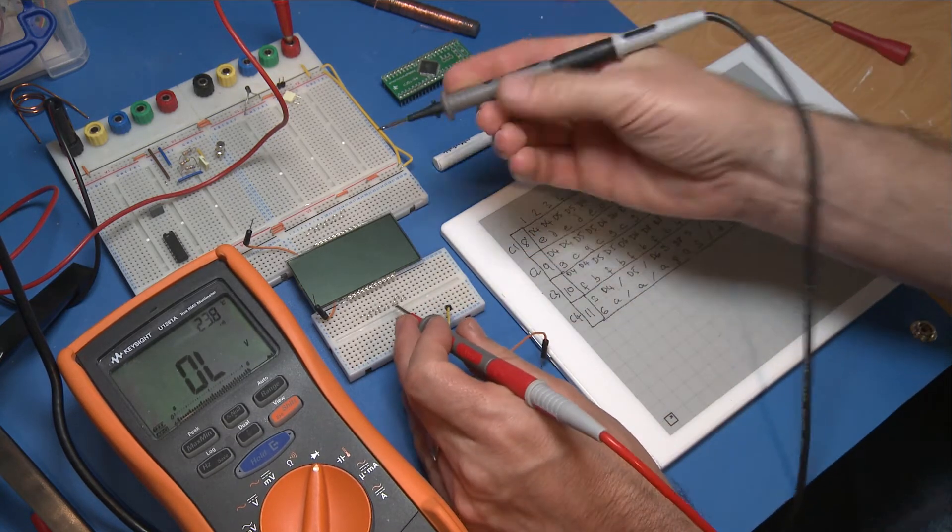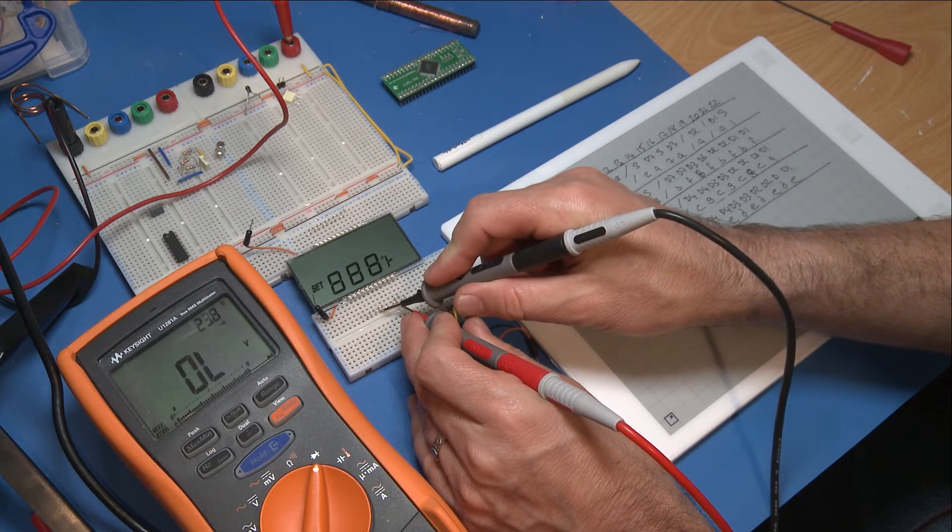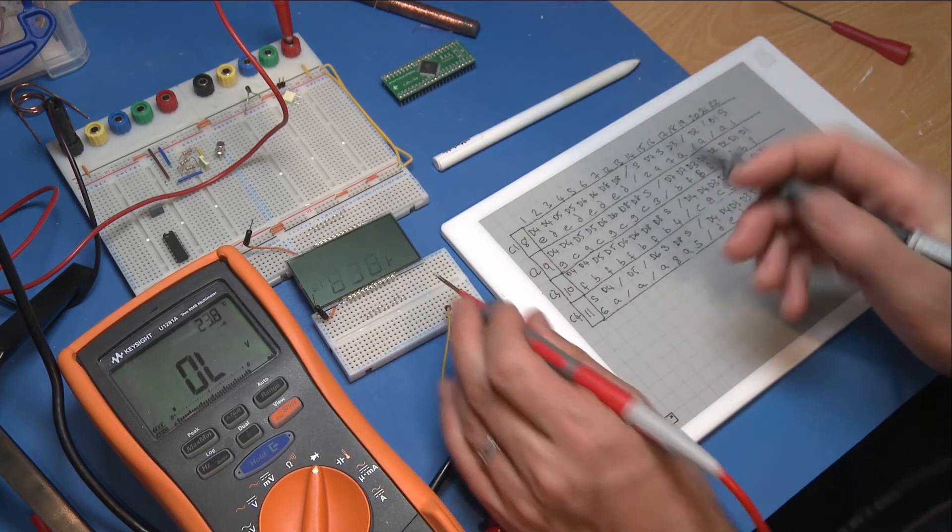If you are doing that with a multimeter, keep swapping it around so at least you change the polarity. You'll get nice strong digits that come out. And if that starts to fade or go funny then just swap your leads around.